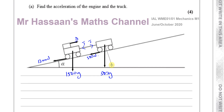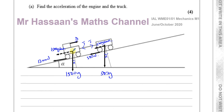The track is inclined at angle alpha to the horizontal. The component of the weight acting down the slope for the engine is 1,500 G sine alpha, and for the truck it is 500 G sine alpha. There's also a component of weight perpendicular to the plane with a reaction force acting up, but those we don't need to consider as they are perpendicular to the direction of motion.